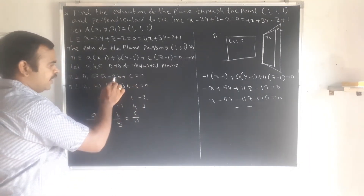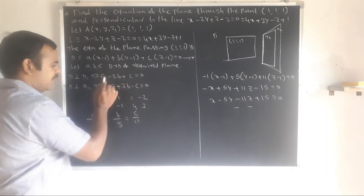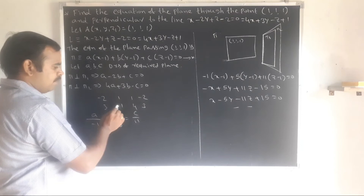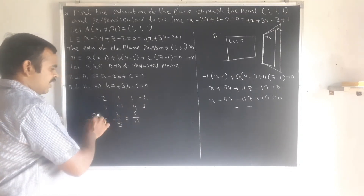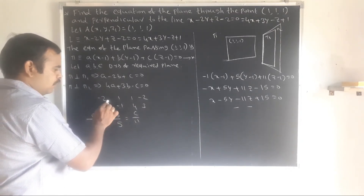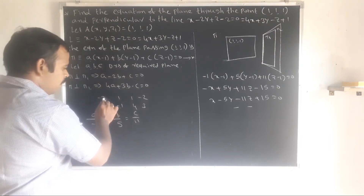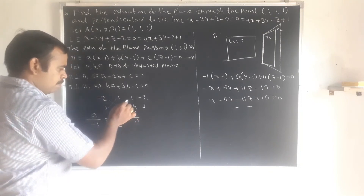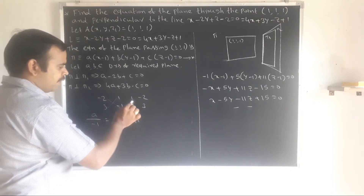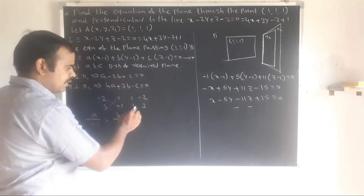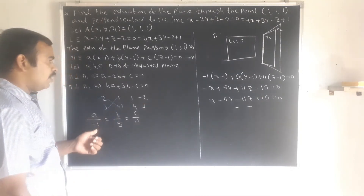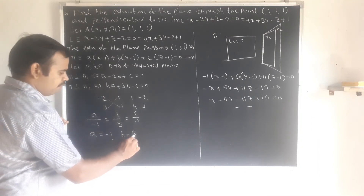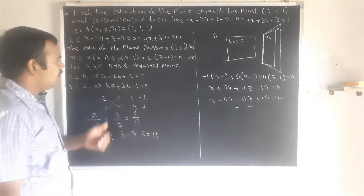Solving for a, b, c using the cross-product method with the determinant arrangement: a over [(minus 2)(minus 1) minus (1)(3)], b over [(1)(4) minus (1)(minus 1)], c over [(1)(3) minus (minus 2)(4)]. This gives: a over (2 minus 3) equal to b over (4 plus 1) equal to c over (3 plus 8). Therefore a over minus 1 equal to b over 5 equal to c over 11, so a equal to minus 1, b equal to 5, c equal to 11.